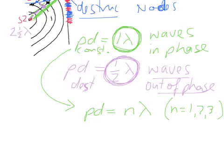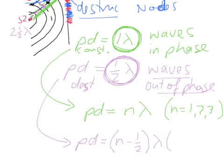When you're considering destructive interference, your path difference is going to be an odd number of half wavelengths. Or we can put it like this: n minus half times by the wavelength. But in this case, n is equal to odd numbers only: 1, 3, 5, 7, 9 and so forth.